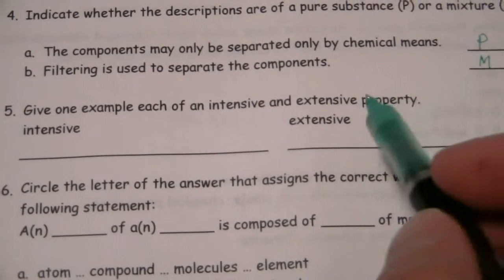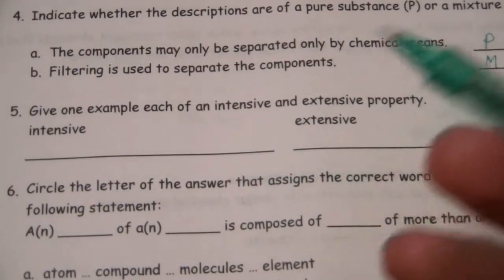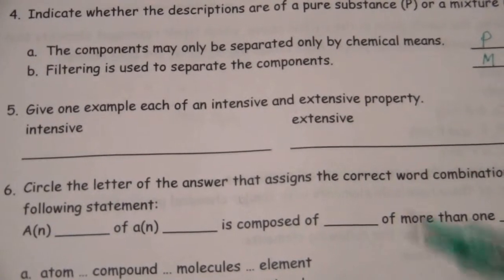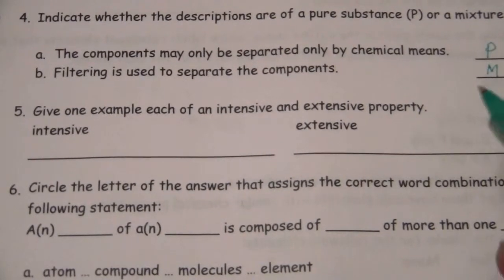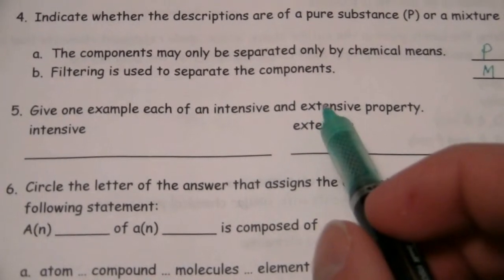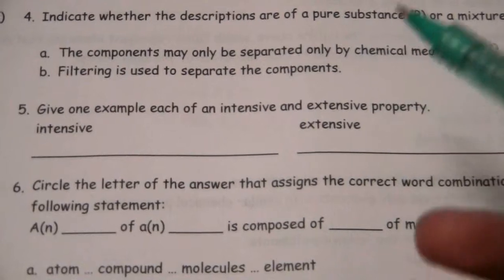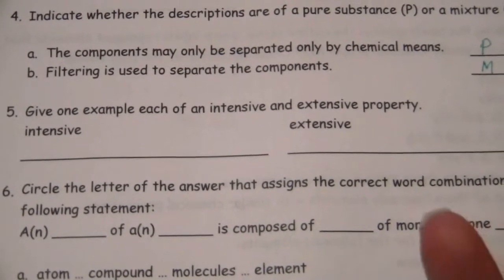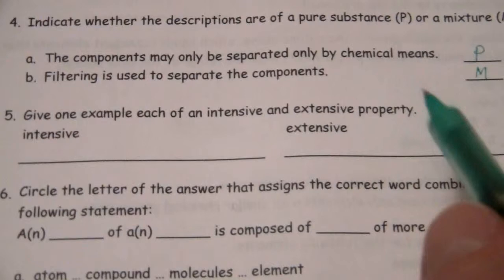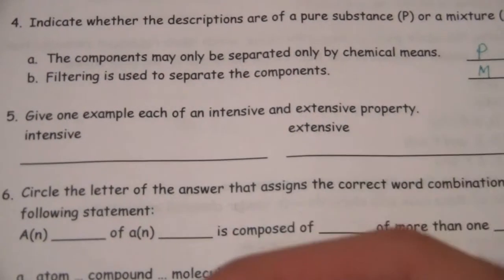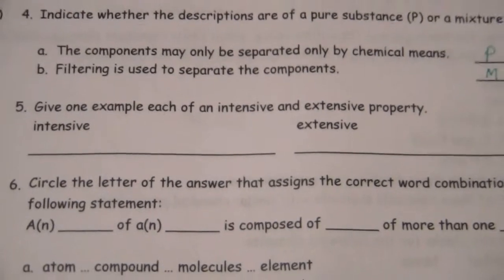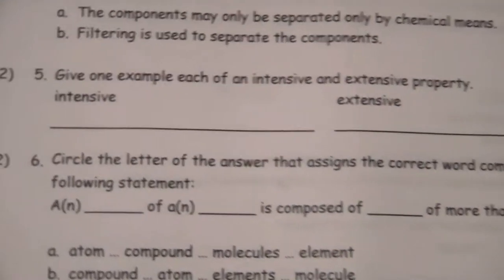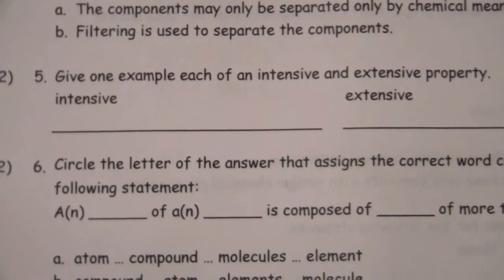First of all, it's a property, so we're talking about a descriptive aspect of some substance. And extensive means it depends on the sample that we have, whereas intensive is going to be the same regardless of what sample. As long as we're looking at the same substance, an intensive property is going to be the same.